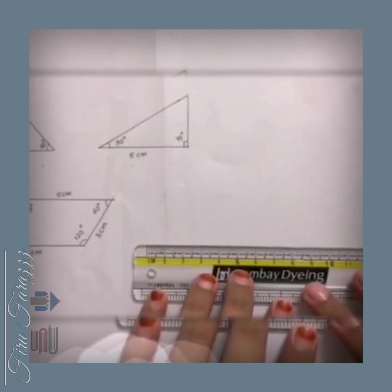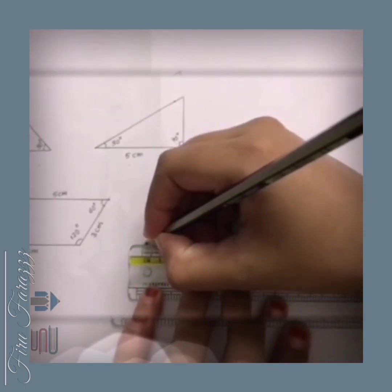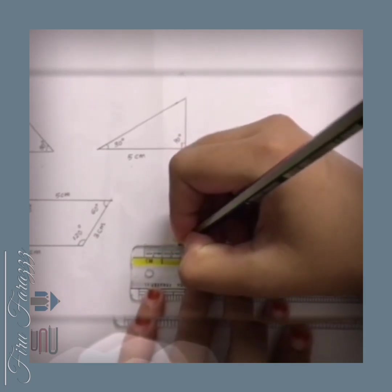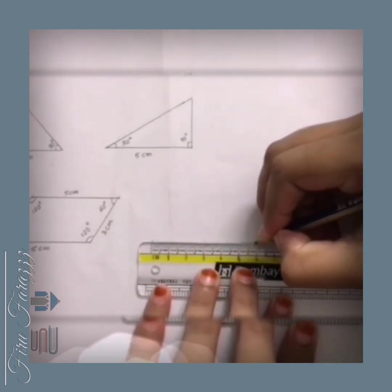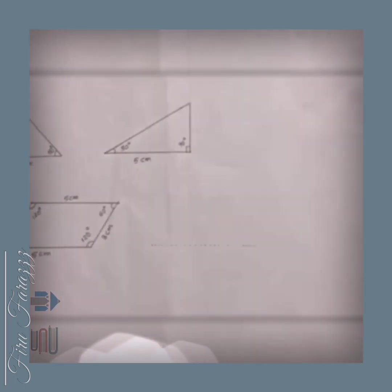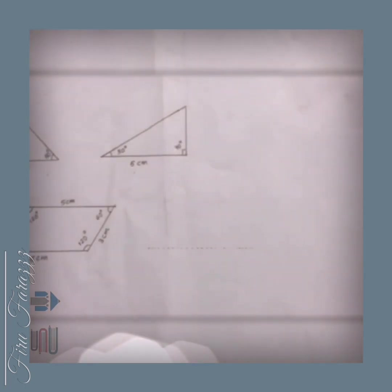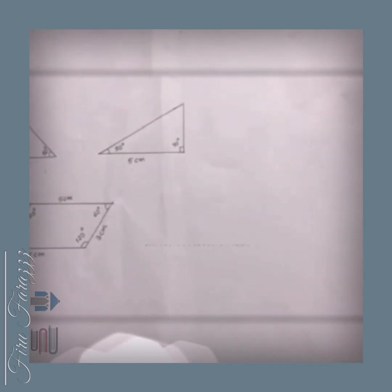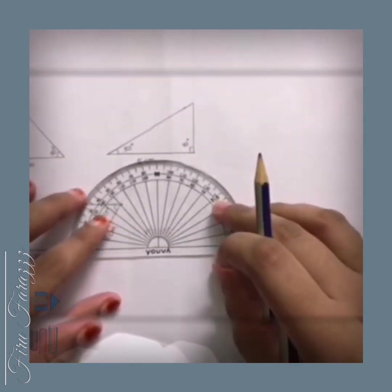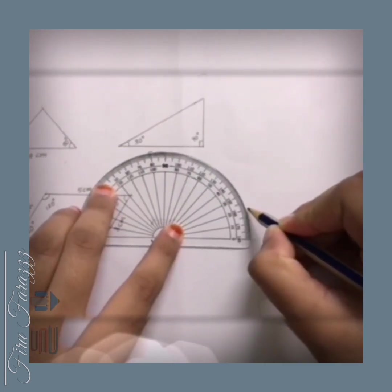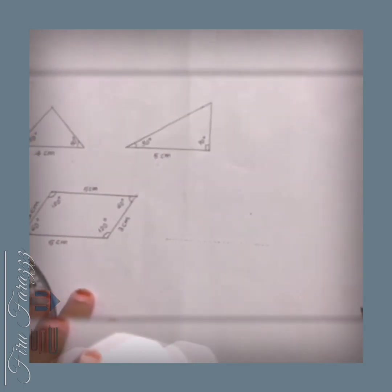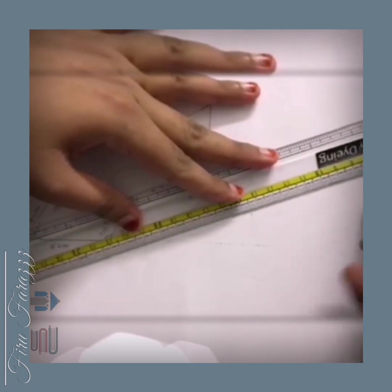In the next figure, first we have to draw a 6cm line — it's a dotted line. Draw the 6cm line. Then take the protractor and take the measurement of 20 degrees at one of the endpoints. Mark 20 degrees and draw a straight line to the marked point.